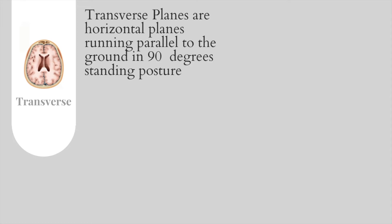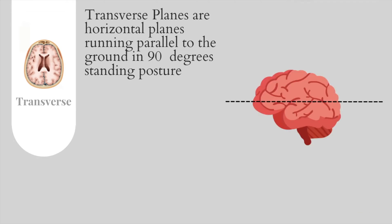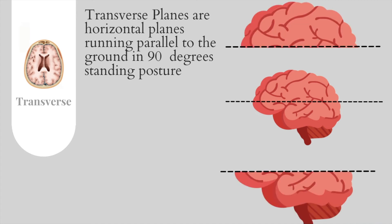Let's now cover the last type of neuroanatomical plane, which is the transverse section. The transverse section or transverse plane is a horizontal plane that runs parallel to the ground at 90 degrees in a standing human body posture. Let's look at a diagram to make this concept more concrete. The dissection of the brain in the case of a transverse plane is along the dissection axis shown here in black, such that after the dissection we can obtain two parts of the brain — upper and lower — each giving us a transverse section view of the brain.